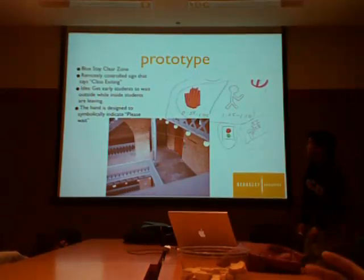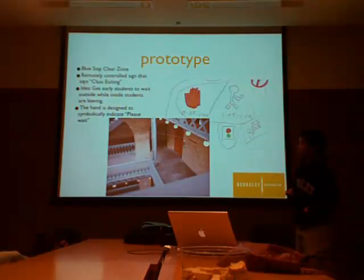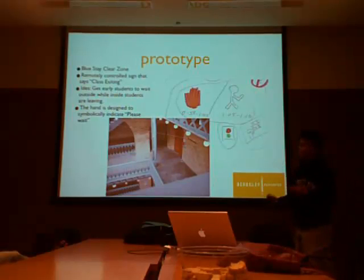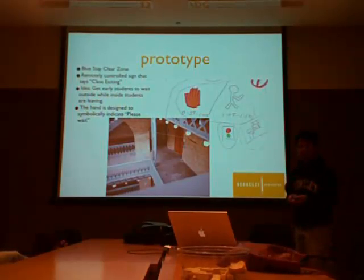The next thing we worked on, and what we're going to show you today, is a sign — a remote-controlled sign that flashes. It says 'class exiting,' and the idea is to get the early-arriving students to wait outside until the majority of the students inside have left. Our priority is for the people who are leaving to get to their next class. It just says 'class exiting' — it doesn't say 'please wait,' because the hand symbol is supposed to indicate that.